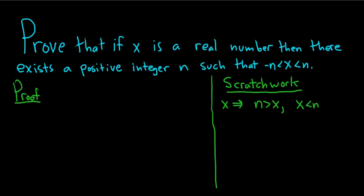So that takes care of the first condition. Now we somehow need to involve negative n. In particular maybe we can start by trying to involve a negative sign. So one way to do that is to look at negative x. So if we look at negative x again by the Archimedean principle this says that there is an integer maybe let's call it m that's bigger than negative x. We can't use the same n, right? The Archimedean principle just guarantees the existence of a number. It doesn't specify what the number is.